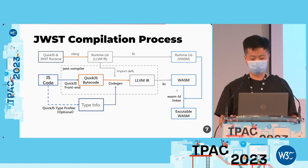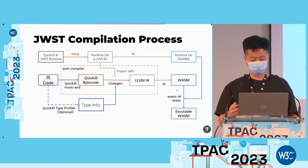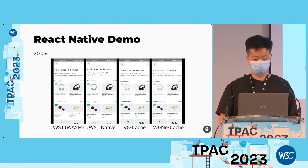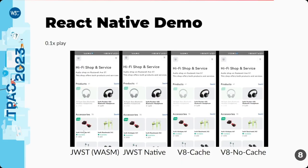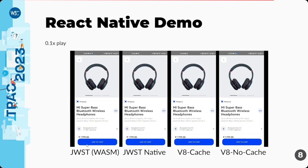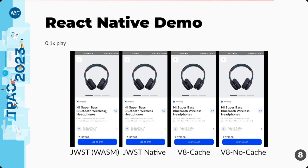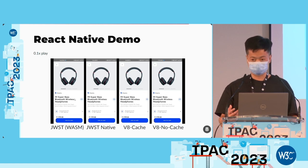Here is the GWST compilation process. As we can see, we use QuickJS bytecode as input and then compile it to WASM. Here is a React Native testing case. It's a demo video that shows the advantage GWST has in the page generation step — it can sometimes outperform the V8 JavaScript engine.